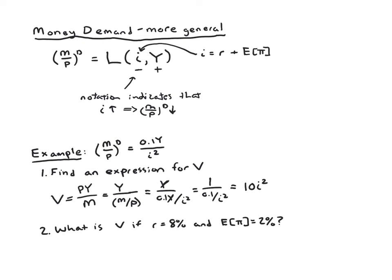Great. So we've got an expression for velocity. It's 10 times the nominal interest rate squared. We don't know the nominal interest rate, so we can't actually get a number here. And that's why it says find an expression for V as opposed to find a number or calculate V. The next part is going to give us some more information, and now we can actually calculate velocity.